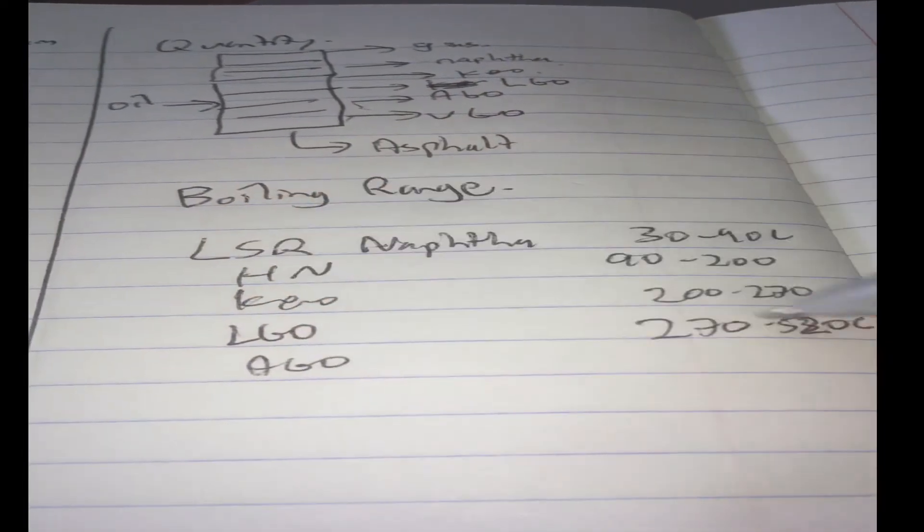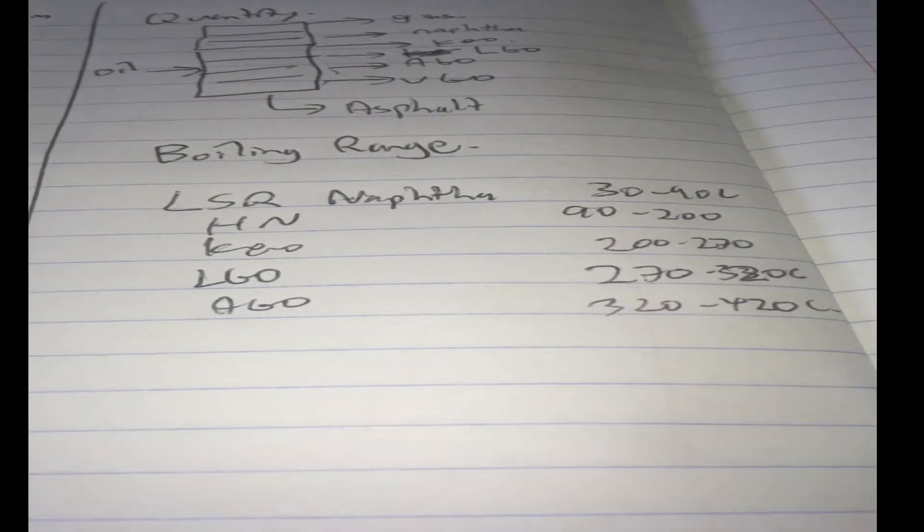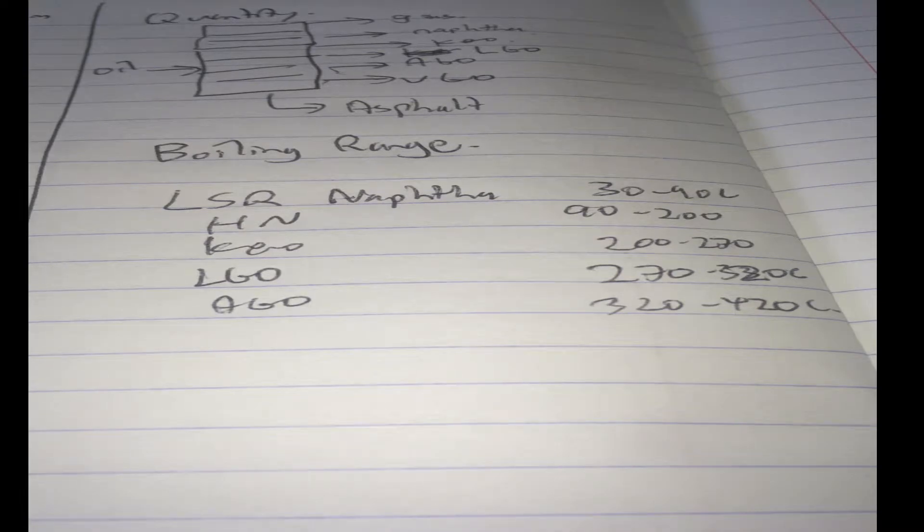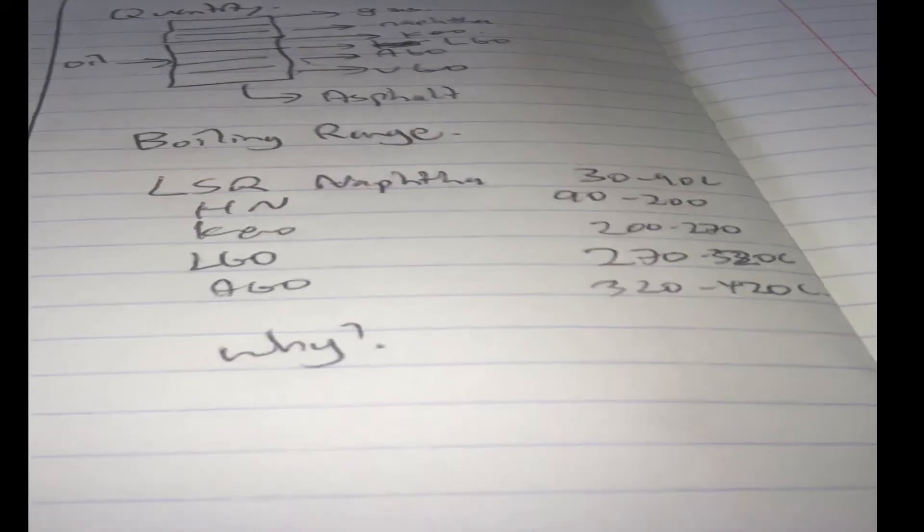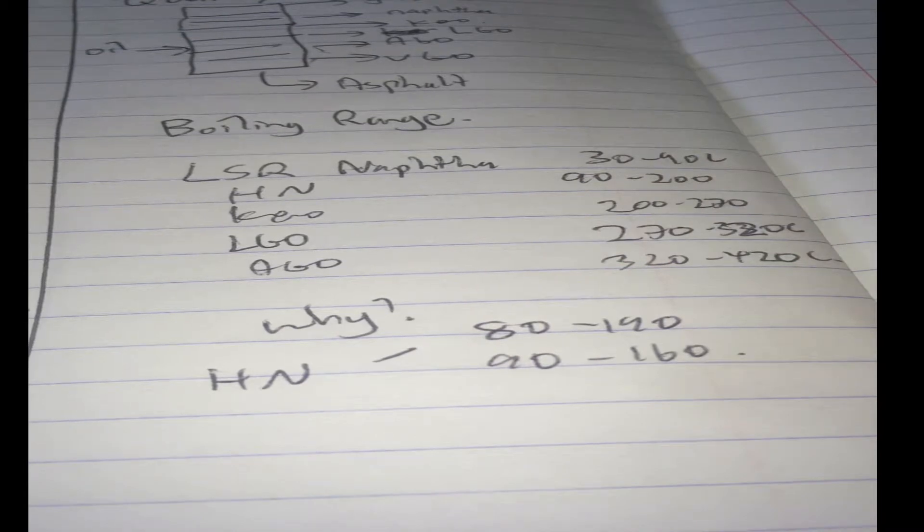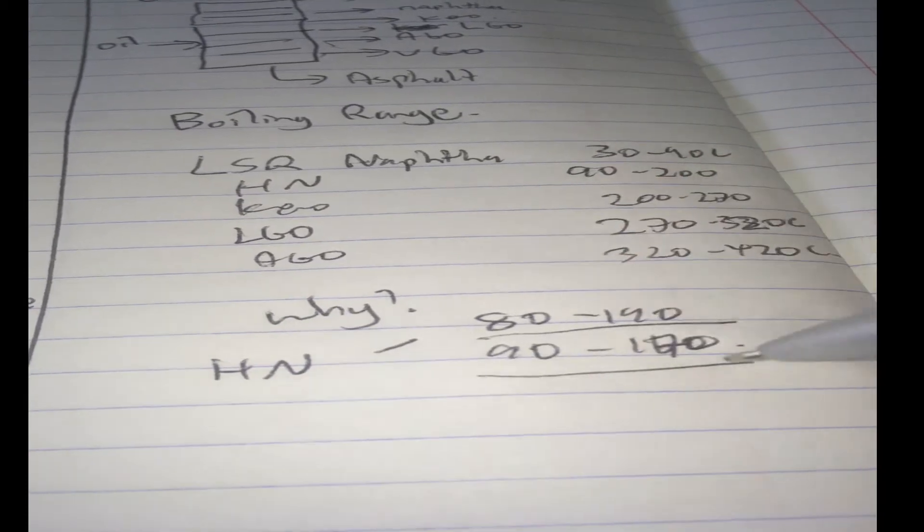Well, you might have seen before that the temperature ranges for each of these fractions are not always consistent in every website you see. Now, question is why? Well, for one thing, each fraction can have a range of boiling ranges. For example, I give you heavy nafta. You can get an 80 to 190 range, or you can also get a 90 to 160 range, or 170. You can get your heavy nafta at this range or this range.